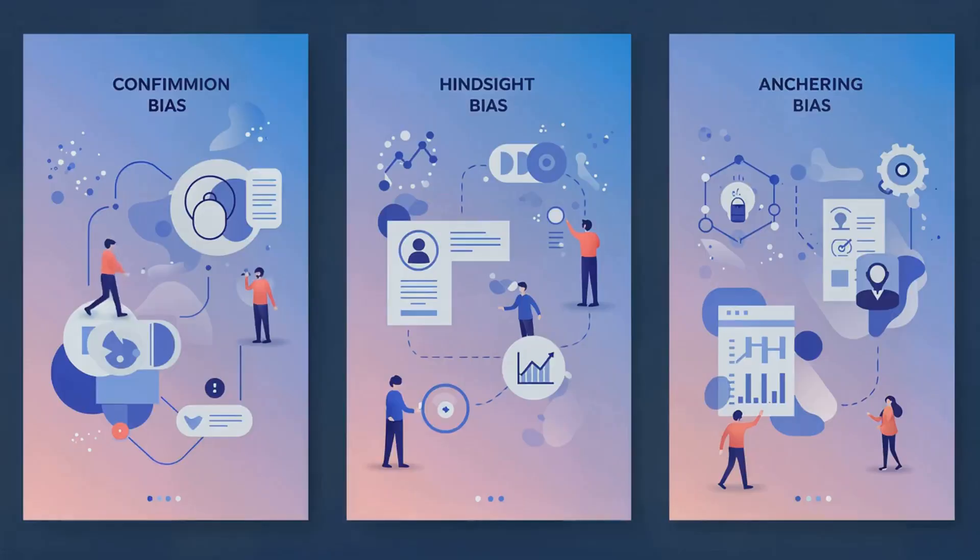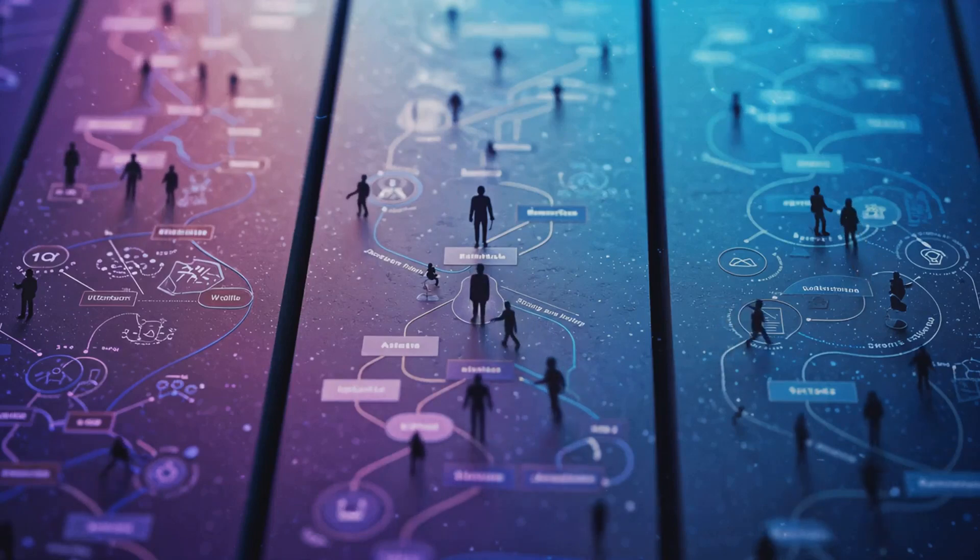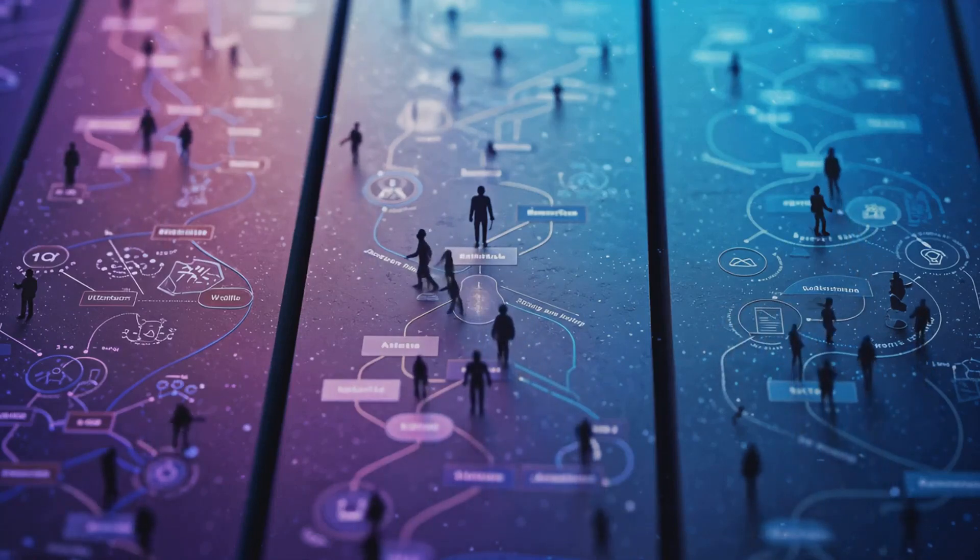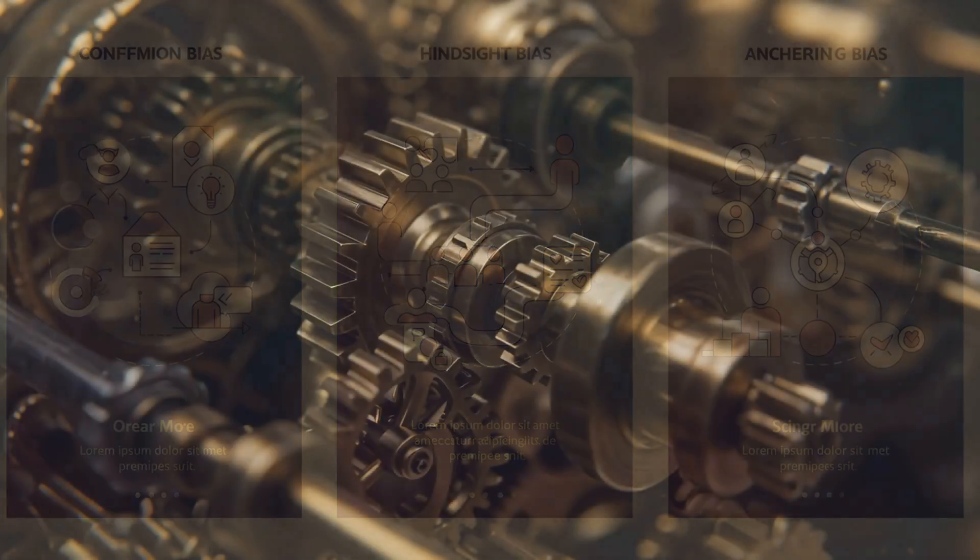Confirmation bias makes you focus on what agrees with your beliefs. Hindsight bias tricks you into thinking you knew it all along. And anchoring bias makes your first impressions stick, even if they're wrong. These are not bugs in the system—they are the system.